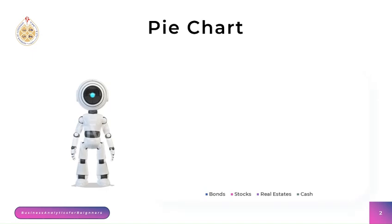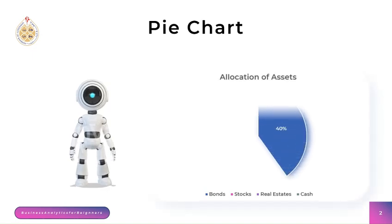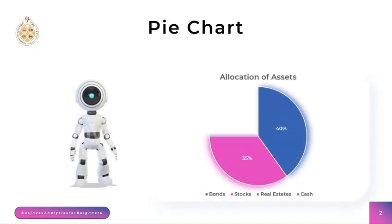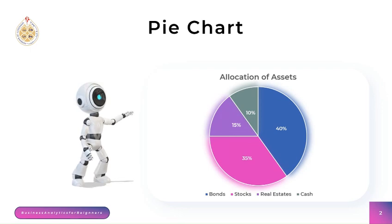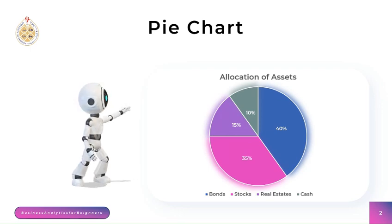First, pie charts are useful for visualizing data divided into distinct categories, where the circle represents the total or 100% of the data, and the pie slices represent the individual categories or groups. Pie charts are used in business presentations, reports, and infographics to present data.